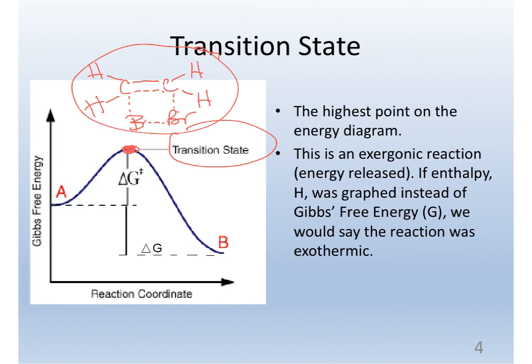And if on the y-axis, it is free energy, we say that this type of reaction where the energy of the products is lower, we call it exergonic instead of exothermic. So if it was enthalpy that we were graphing, we would say exothermic.